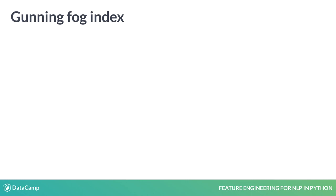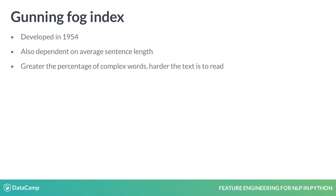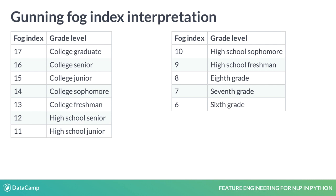The Gunning Fog Index was developed in 1954. Like Flesch, this score is also dependent on the average sentence length. However, it uses the percentage of complex words in place of average syllables to compute its score. Here, complex words refer to all words that have three or more syllables. Unlike Flesch, the formula for the Gunning Fog Index is such that the higher the score, the more difficult the passage is to understand. The index can be interpreted using this table.